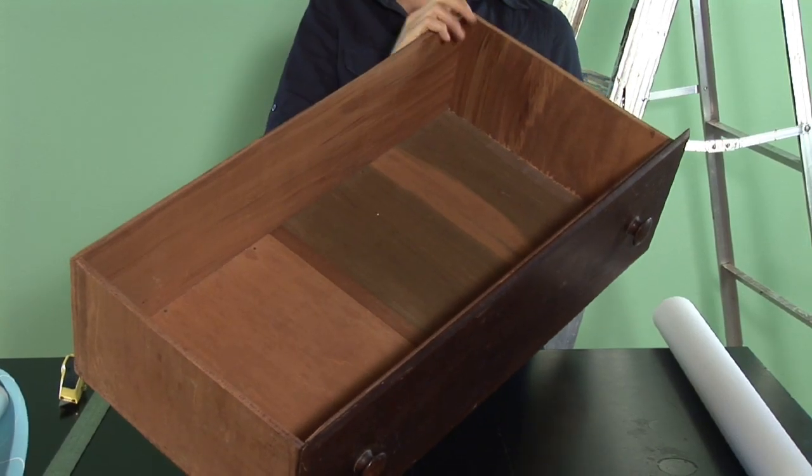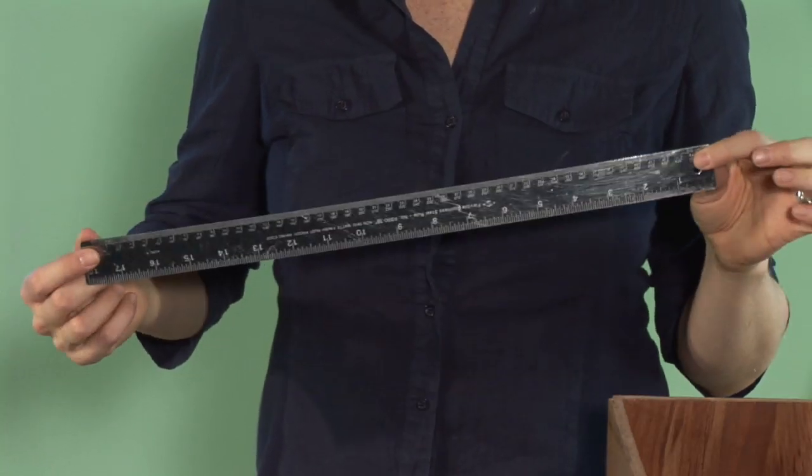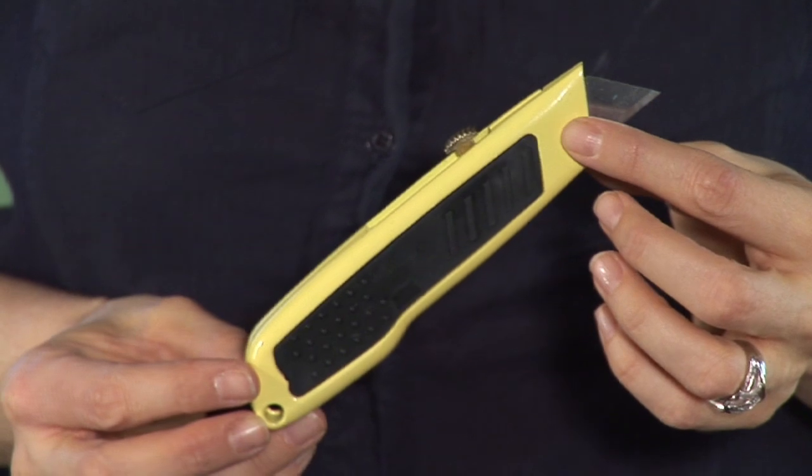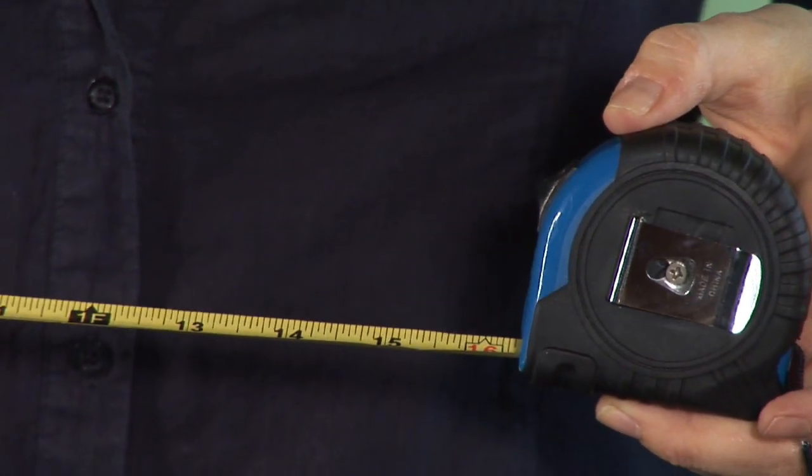You need some basic supplies. Of course, you need the drawer, you need the wallpaper, you need a ruler, an X-Acto knife or a carpet knife, any kind of sharp blade, and a measuring tape.